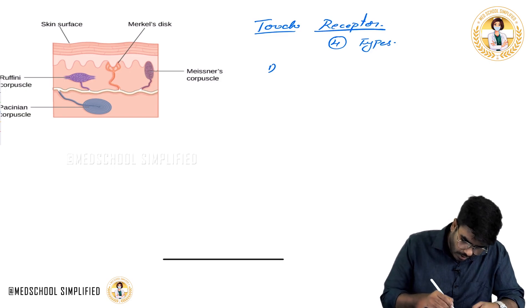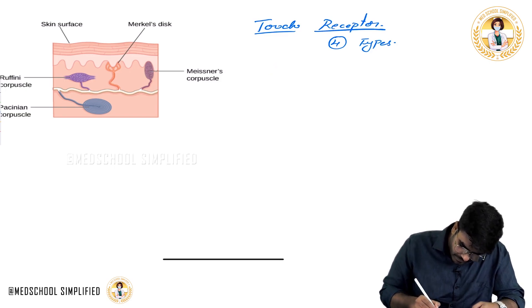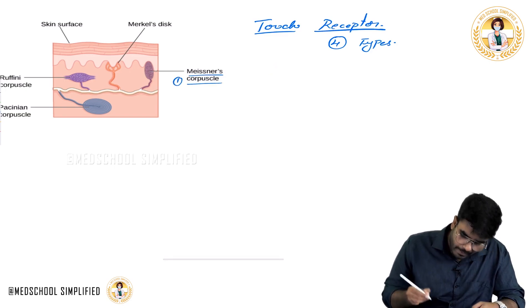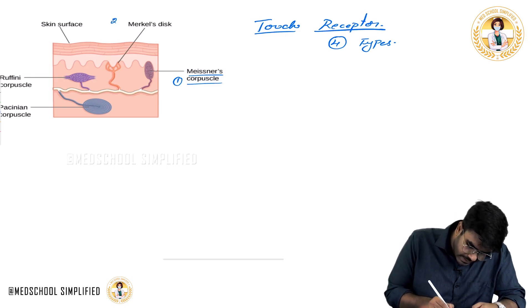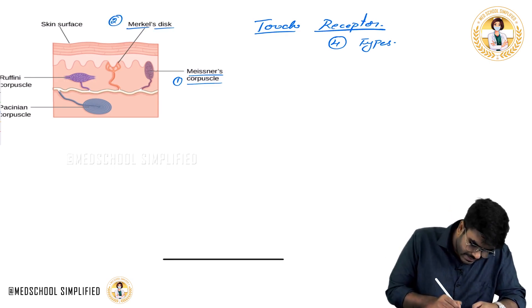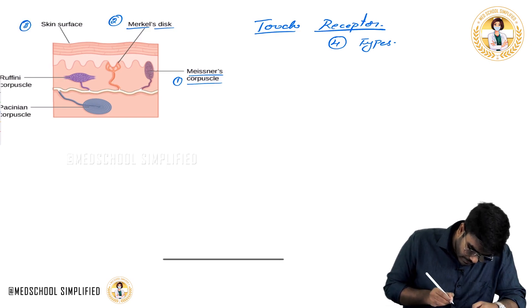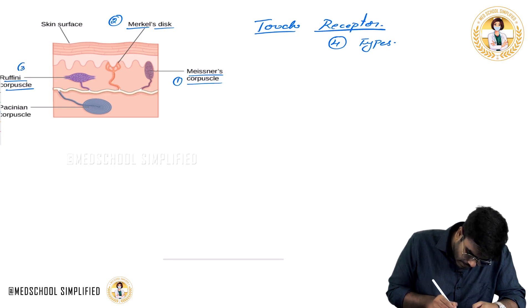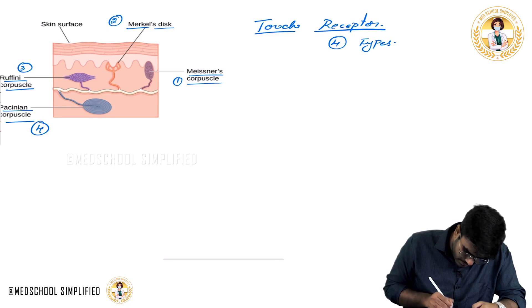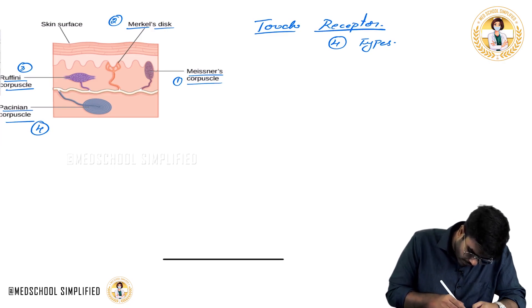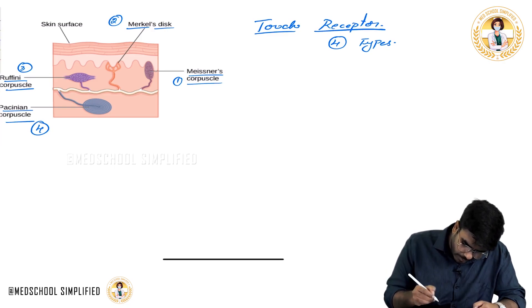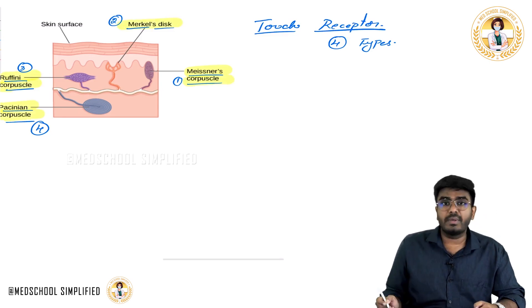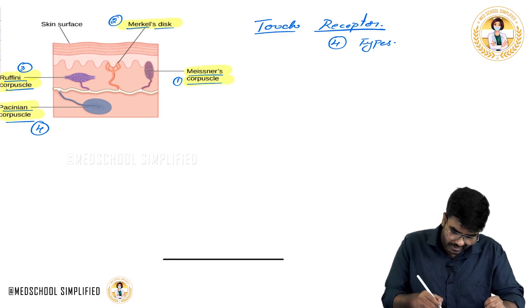The first type of touch receptors are called as Meissner's corpuscles, the second type are called as Merkel discs, the third type are called as Ruffini's corpuscles, and the fourth type are called as Pacinian corpuscles. So there are four types of touch receptors: Meissner's corpuscles, Merkel's disc, Ruffini's endings or Ruffini's corpuscles, and Pacinian corpuscles.